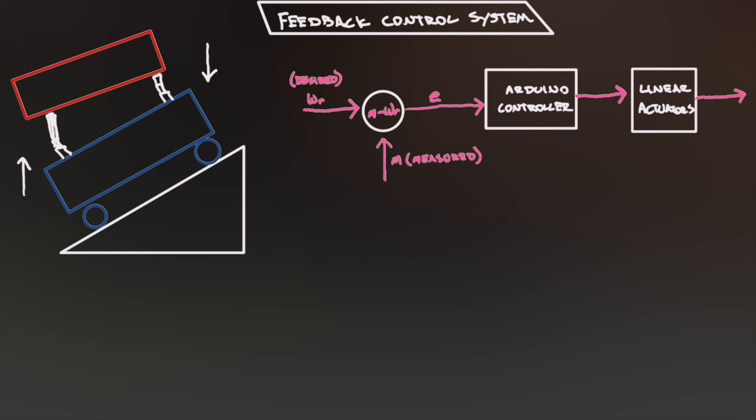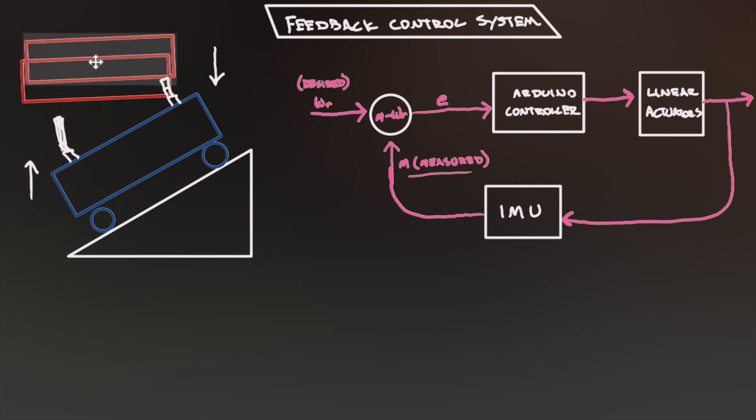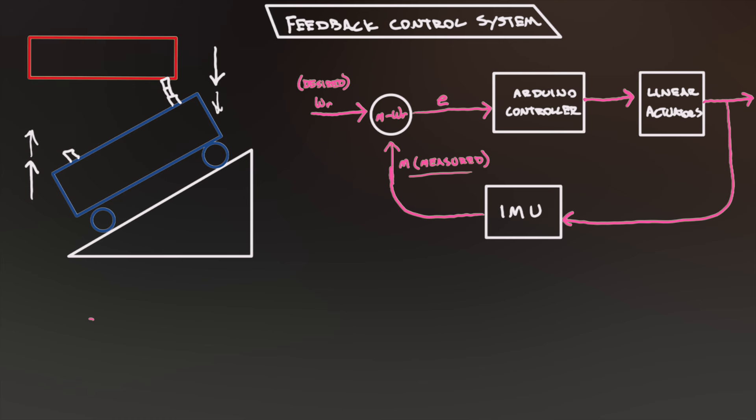Now, this is called a control or feedback loop, because at this point, we repeat the process. We take a new measurement, which should be slightly closer to our desired value, recalculate the error, and extend or retract the motors again. This loop continues until the error is zero, meaning the measured value is the same as the desired value, and Steady is level.